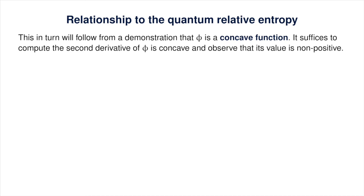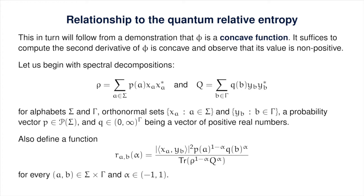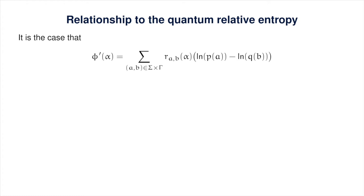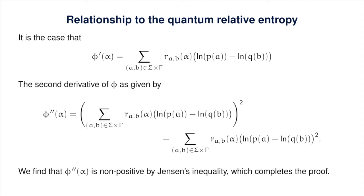To prove that phi is concave, we compute the second derivative and observe that it is non-positive. Starting with spectral decompositions of rho and q, we define a function r sub ab as shown here, where a and b index the eigenvalues of rho and q. For fixed alpha, these functions form a probability distribution. Using these, we express the first derivative of phi, and differentiating again yields an expression that is always non-positive by Jensen's inequality. That completes the proof of the theorem.